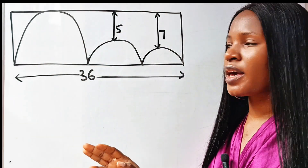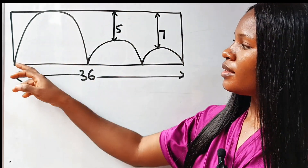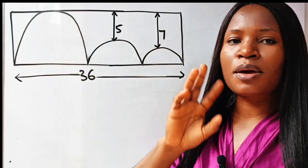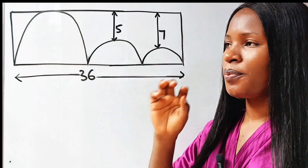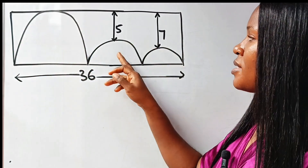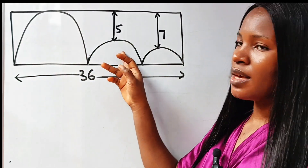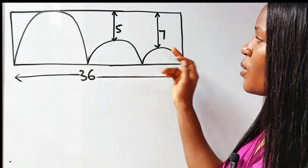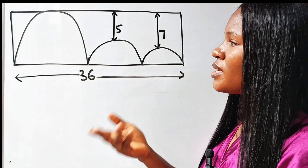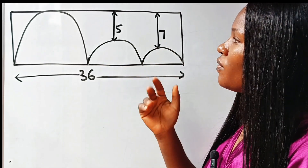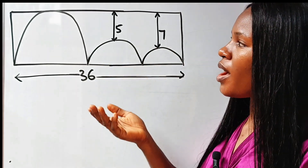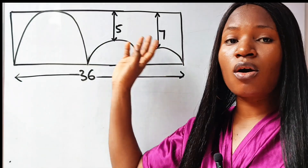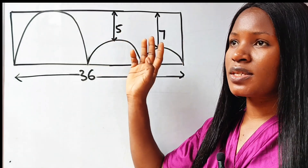This is not drawn to scale. This is supposed to be a semicircle, this is also a semicircle, and this is also a semicircle. The question says that we should find the perimeter of this rectangle.